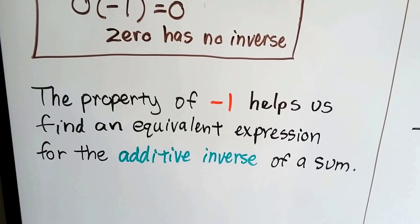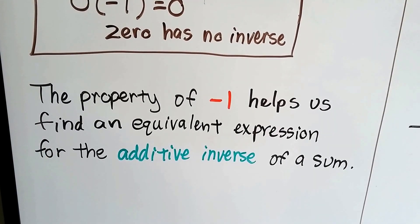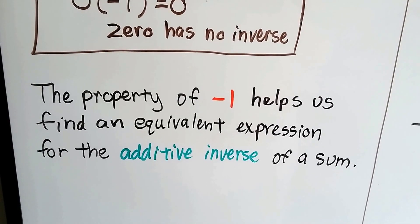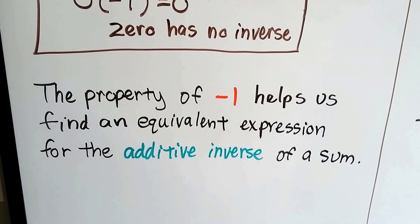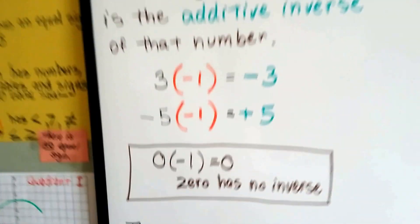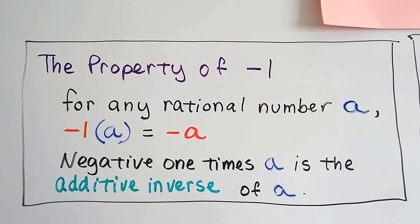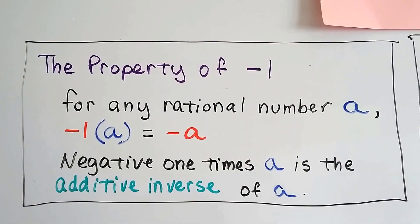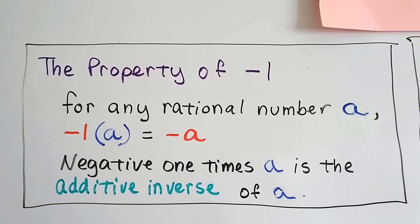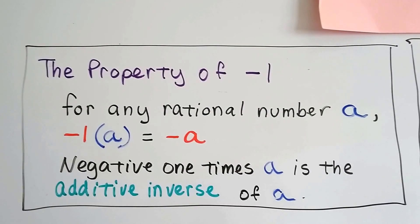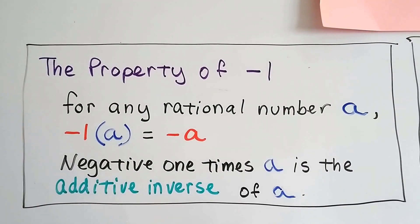The property of negative 1 helps us find an equivalent expression for the additive inverse of a sum — for the opposite of a sum. Here's the formal property of negative 1 for any rational number a: negative 1 times a, the inverse of 1 times a, equals the inverse of a. Negative 1 times a is the additive inverse of a.